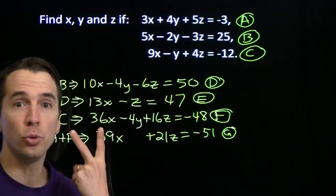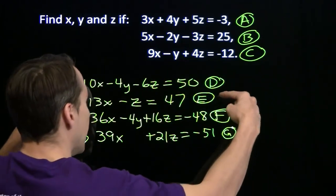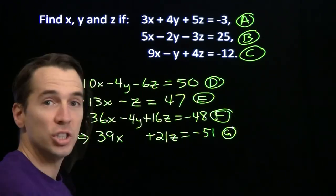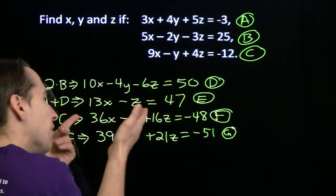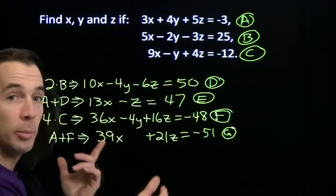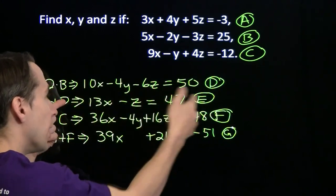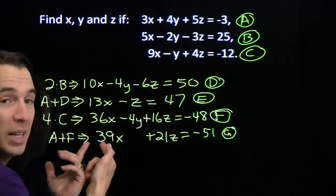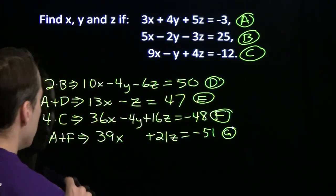Now we have a system of two linear equations with two unknowns, equation E and equation G. Together, they're both linear equations, and they only have x and z, no y in sight. So now we'll set up an elimination just with these two. We're going to multiply equation E by negative 3 to set up elimination of x.